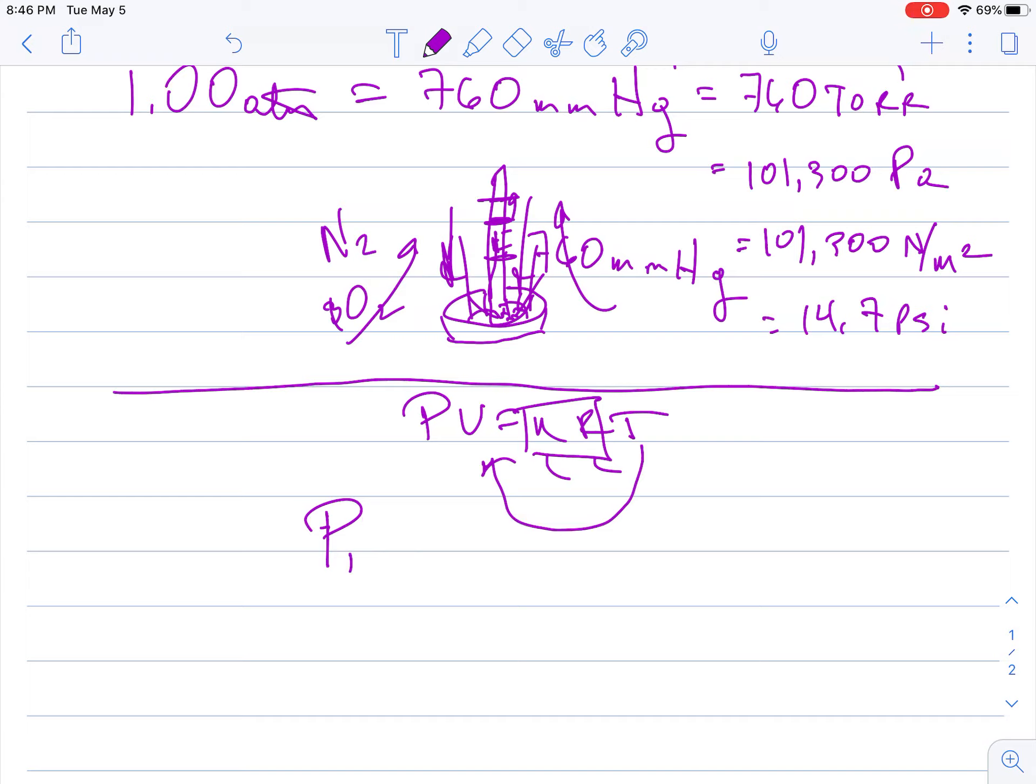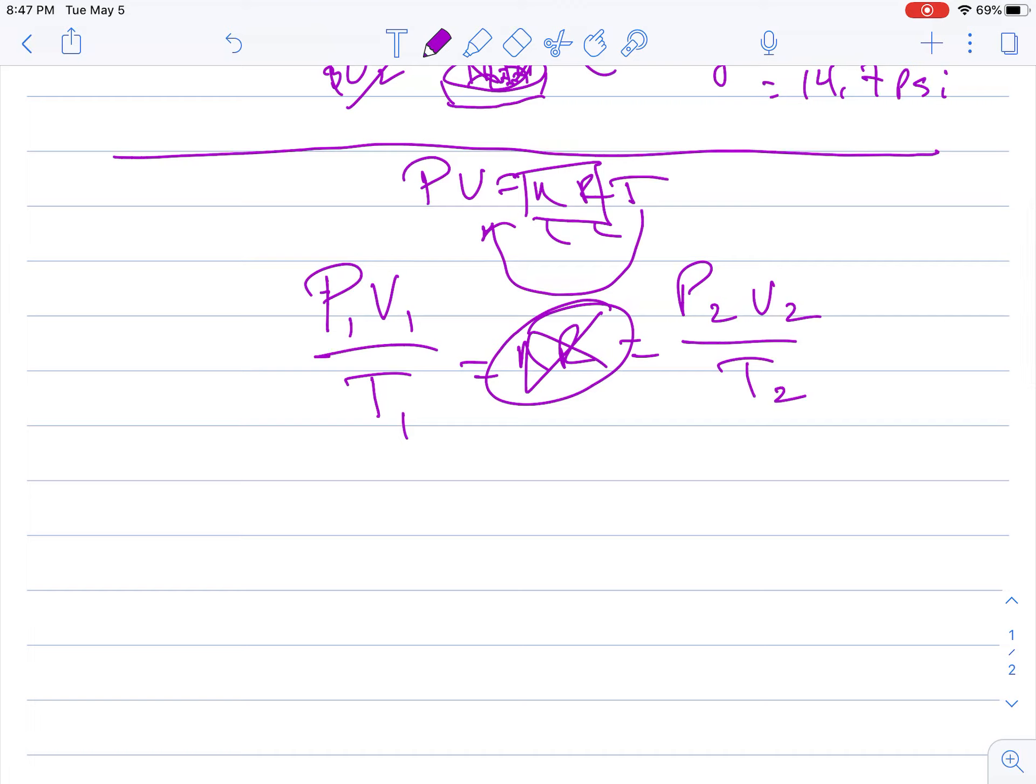If you have two different situations, typically what you can do is move this T over here, so you'd have P1V1/T1 equals NR, which also equals P2V2/T2. Typically, your NR is going to be a constant. If A equals B and B equals C, then A equals C. This is the cool way to get what's known as the combined gas law, and you can isolate anything out of this.